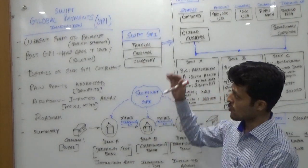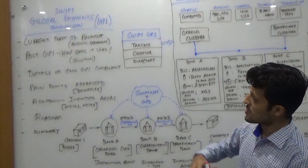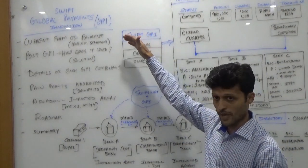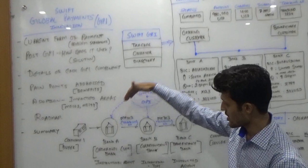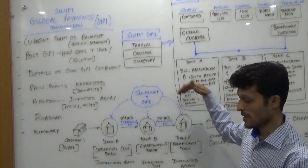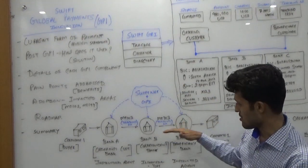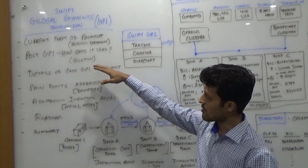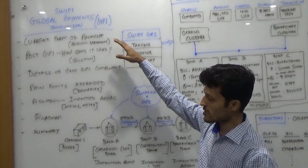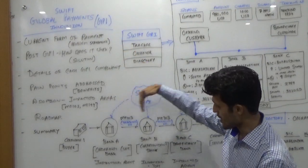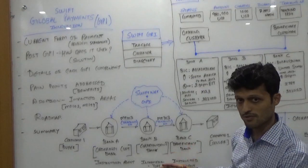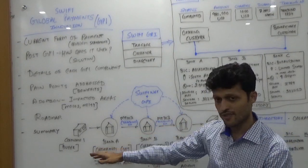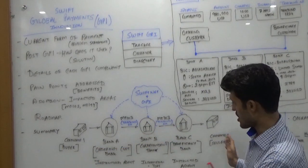I will start with what we are going to cover today. We will start with what is the current form of payment — how international payments are currently flowing through different flows. Then we will see the problem statement with respect to that: what are the challenges when we initiate a payment from one end of the continent to the other.